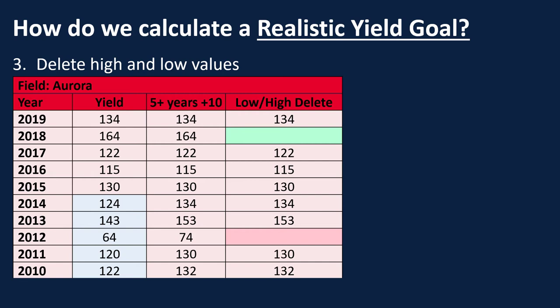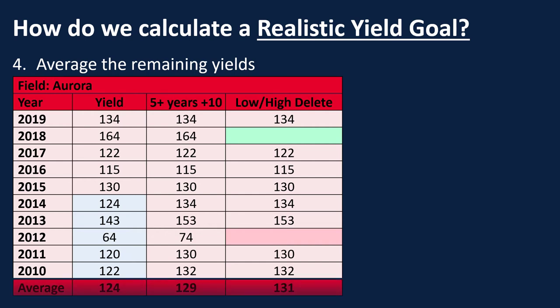After we've deleted the high and low values — and there might be more than one each depending on your field and your years — the next thing we're going to do is average those remaining yields. We see here that we end up with 131 bushels per acre as our average yield over the last ten years after deleting the high and the low.